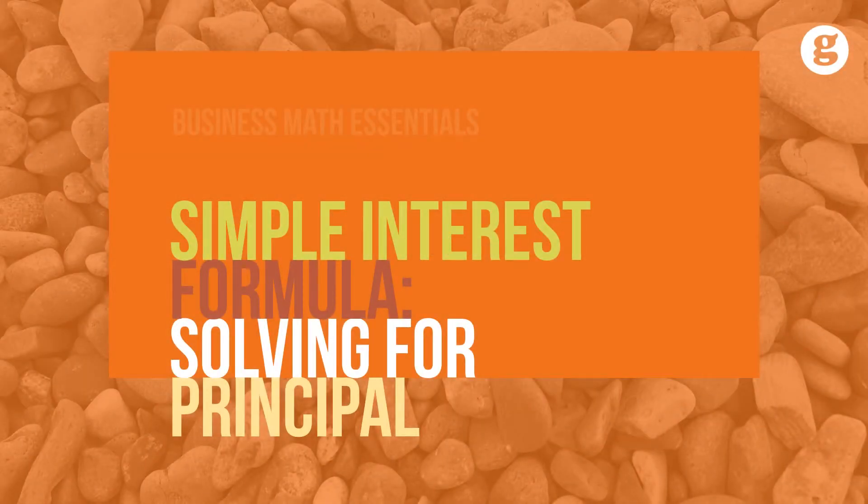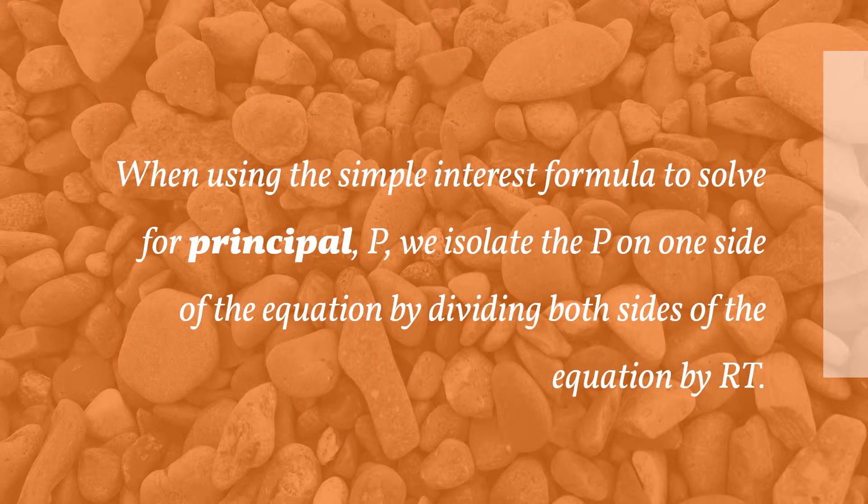Let's take a look at using the simple interest formula to solve for principal. When using the simple interest formula to solve for principal, P, we isolate the P on one side of the equation by dividing both sides of the equation by RT.